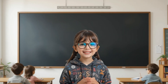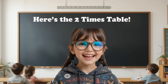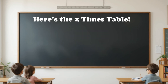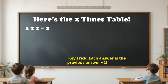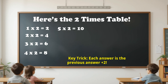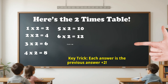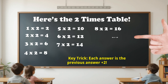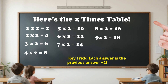Now, here's the full two times table. Listen carefully as I read it out loud and repeat after me. One times two is two, two times two is four, three times two is six, four times two is eight, five times two is ten, six times two is twelve, seven times two is fourteen, eight times two is sixteen, nine times two is eighteen, ten times two is twenty. Great job.